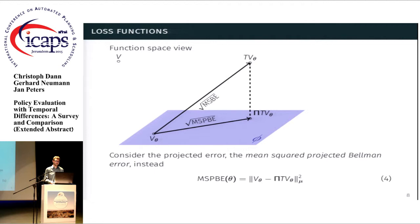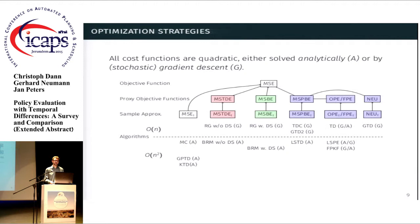After this very quick overview of some of the loss functions, we can look at another dimension of how to categorize the methods. And this other dimension is how do these methods try to minimize the loss function that they chose. And it's actually pretty simple because the loss functions, all of them, are convex and quadratic. So we can either solve them analytically by setting the gradient to zero, or we can perform some sort of stochastic gradient descent. And depending on what approach the algorithm chooses, it has either runtime that is quadratic in the number of features or linear in the number of features.